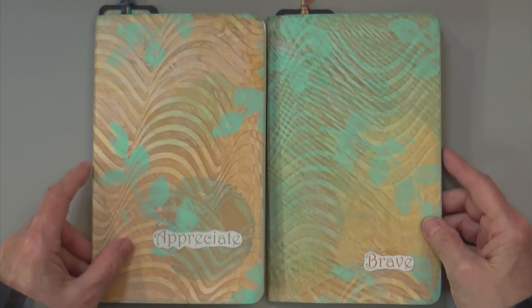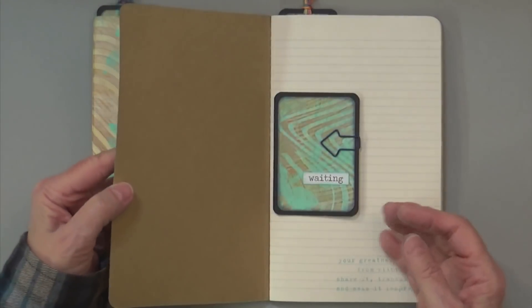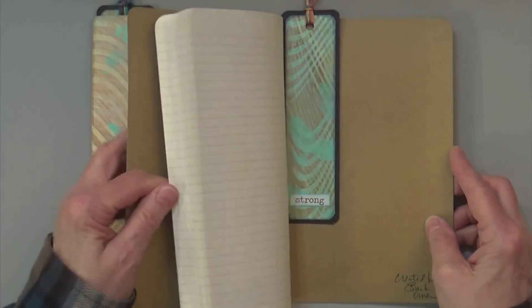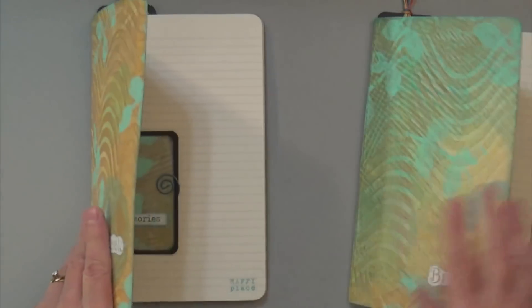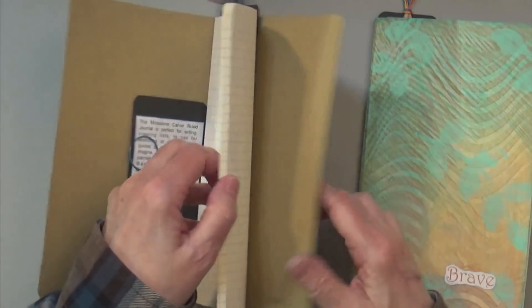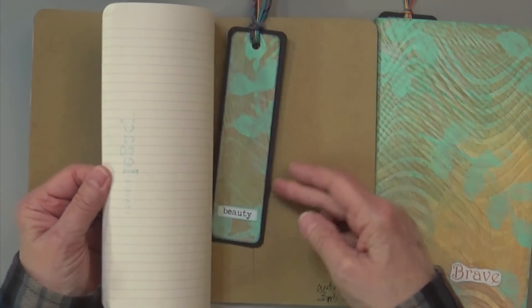I just love the color combination of these—personal preference. There's the ATC with the information and the bookmark. I stamped different colors of ink depending on what the predominant color was in the painted paper for the cover.